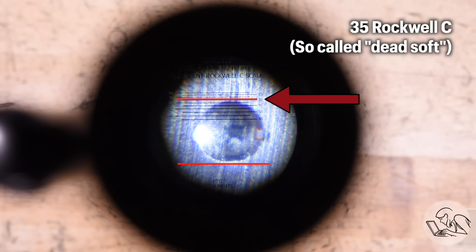You put the scope centered over your punch mark. You line up the bottom of the punch mark with that bottom reference line, and then the lines at the top tell you the Rockwell C hardness of the material based on the size of that punch mark. As you can see, we're about 35 here.